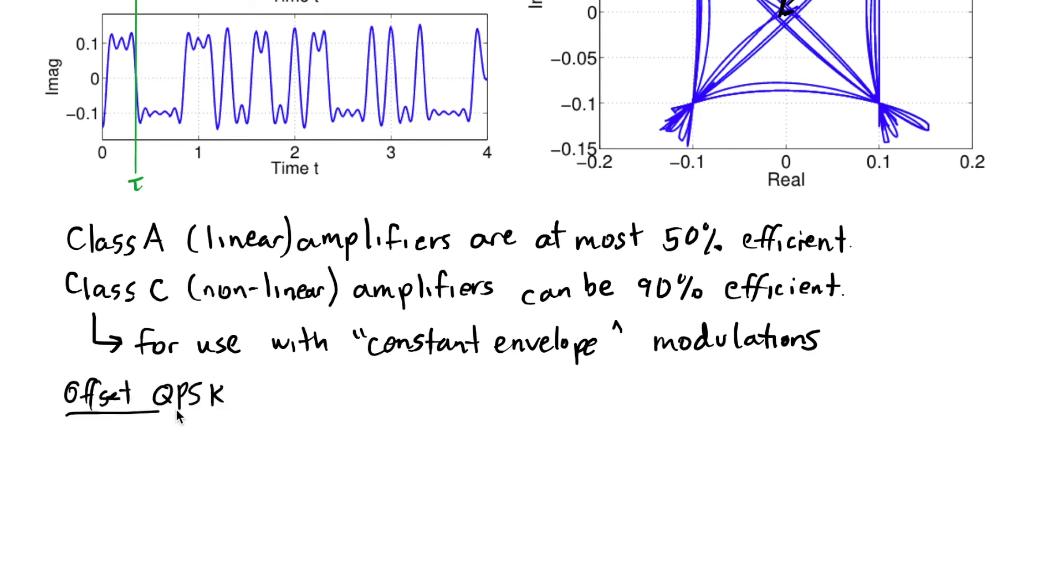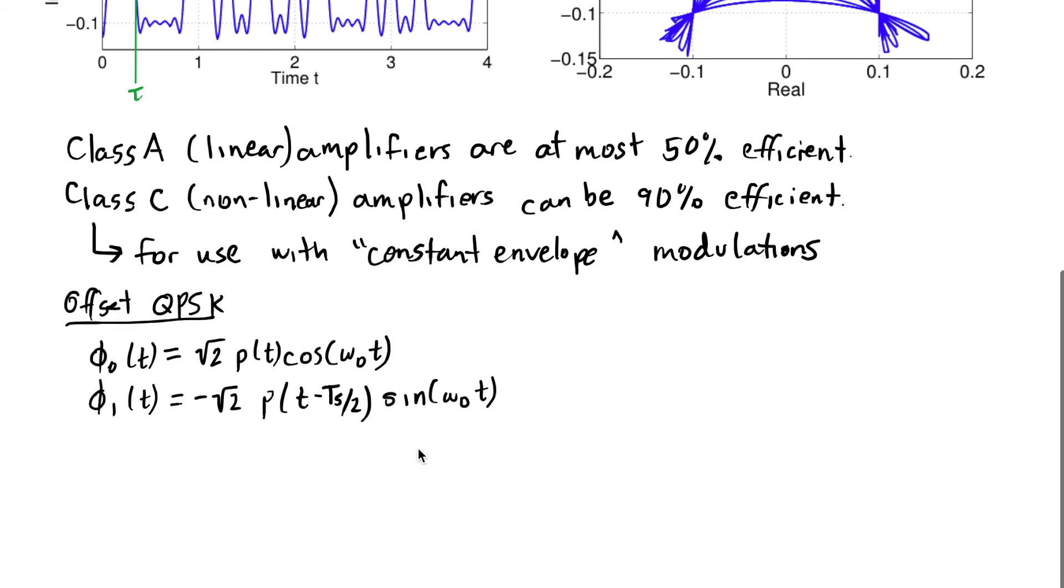In offset QPSK, we have almost the identical two basis functions, except that the pulse shape for the phi_1 function is just shifted by T_s/2 to the right. That is, it's delayed by half a symbol period. That's the only thing that happens.